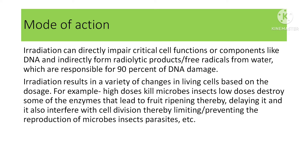Irradiation can result in various changes in living cells depending upon the dosage. For example, high doses can kill microbes and insects, whereas low doses can destroy some of the enzymes that lead to fruit ripening, thereby delaying it, and also interfere with cell division, thereby limiting or preventing the growth of microbes, insects, or parasites.